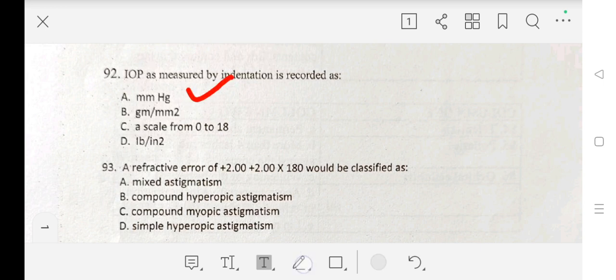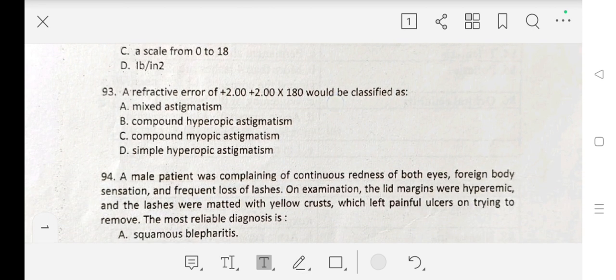Question number 93 is: A refractive error of plus 2 plus 2 into 180 would be classified as A. mixed astigmatism, B. compound hyperopic astigmatism, C. compound myopic astigmatism, D. simple hyperopic astigmatism. The correct answer is B. compound hyperopic astigmatism.